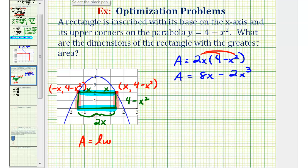So now we'll find the first derivative. So A prime is equal to the derivative of 8x which would be 8 minus the derivative of 2x to the third. That would be 6x to the second.